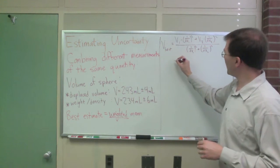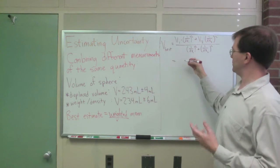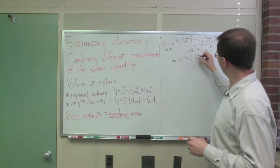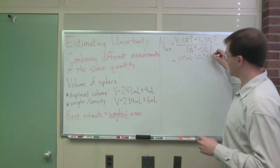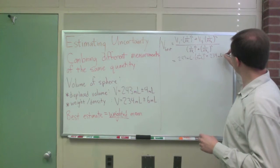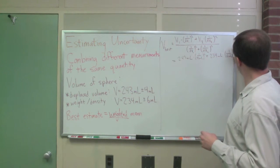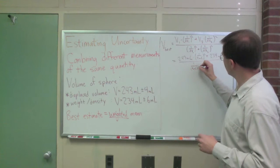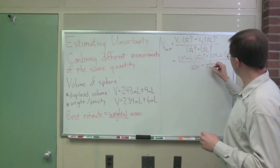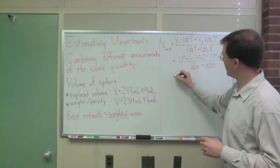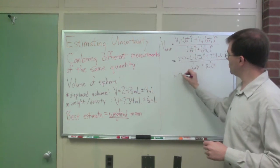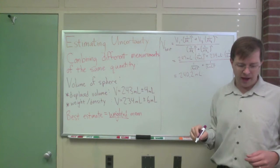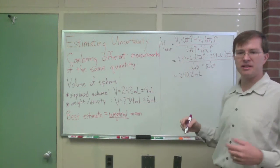And when I plug those things in, plugging in 243 milliliters times 1 over 4 milliliters squared plus 234 milliliters times 1 over 6 milliliters squared divided by 1 over 4 milliliters squared plus 1 over 6 milliliters squared. When I do that, what I come up with is 240.2 milliliters and more digits after that, certainly. And that's my best estimate, that's my weighted mean.